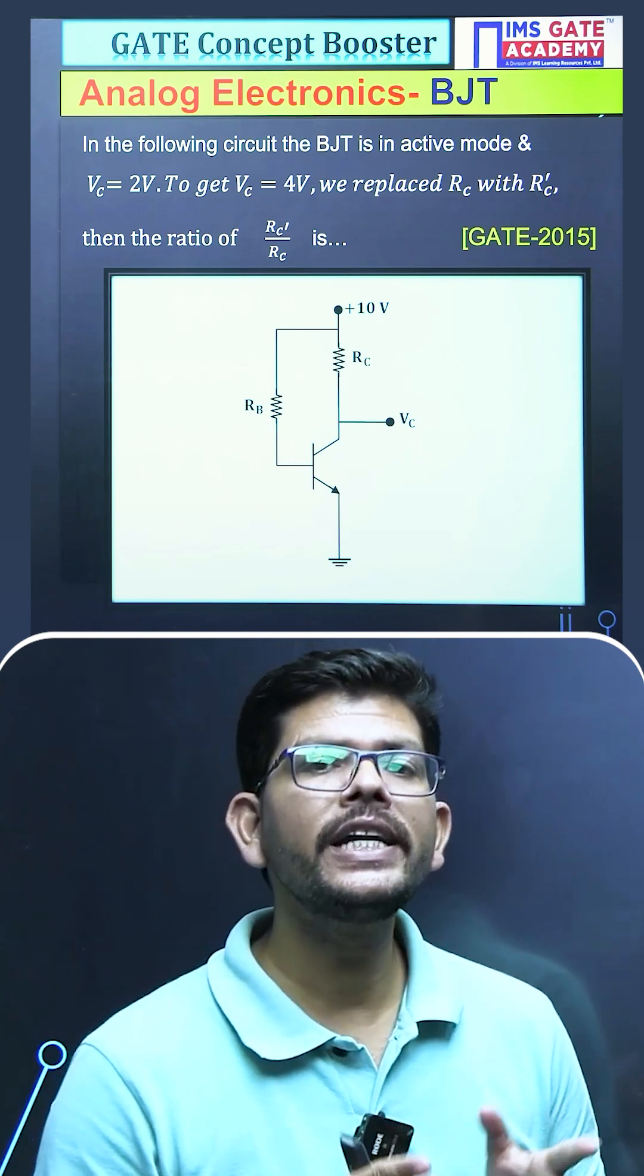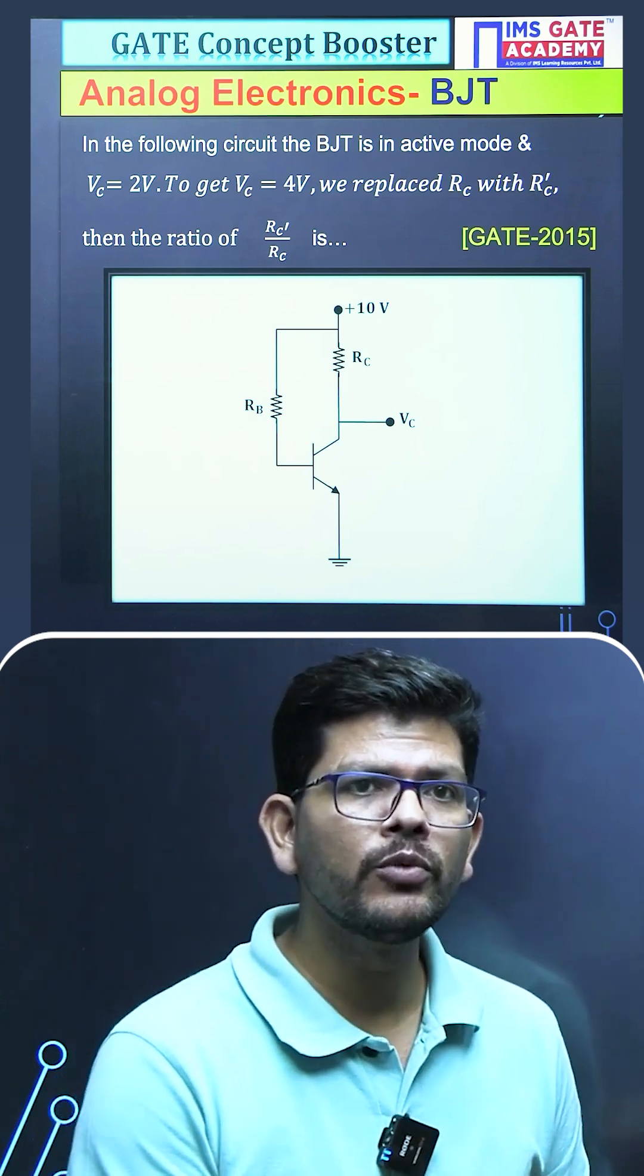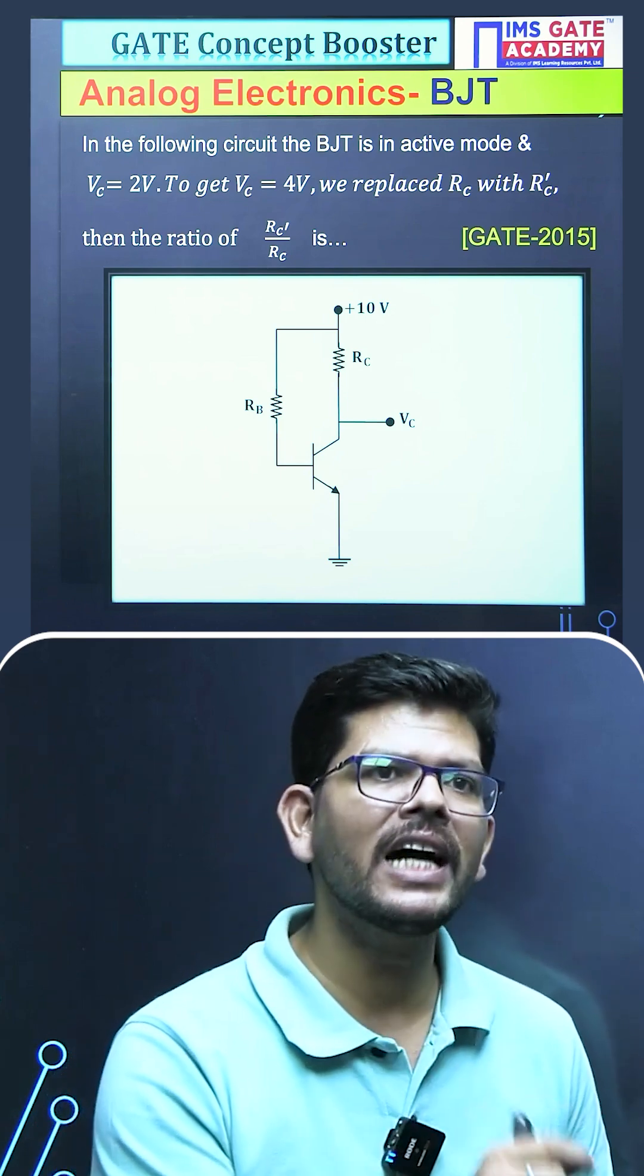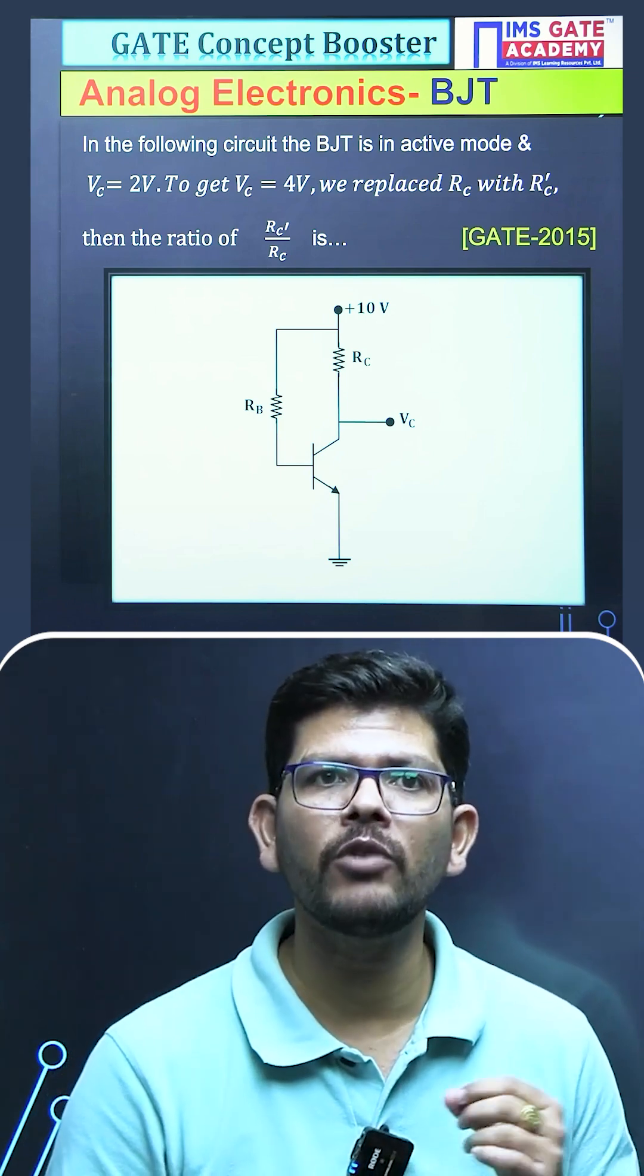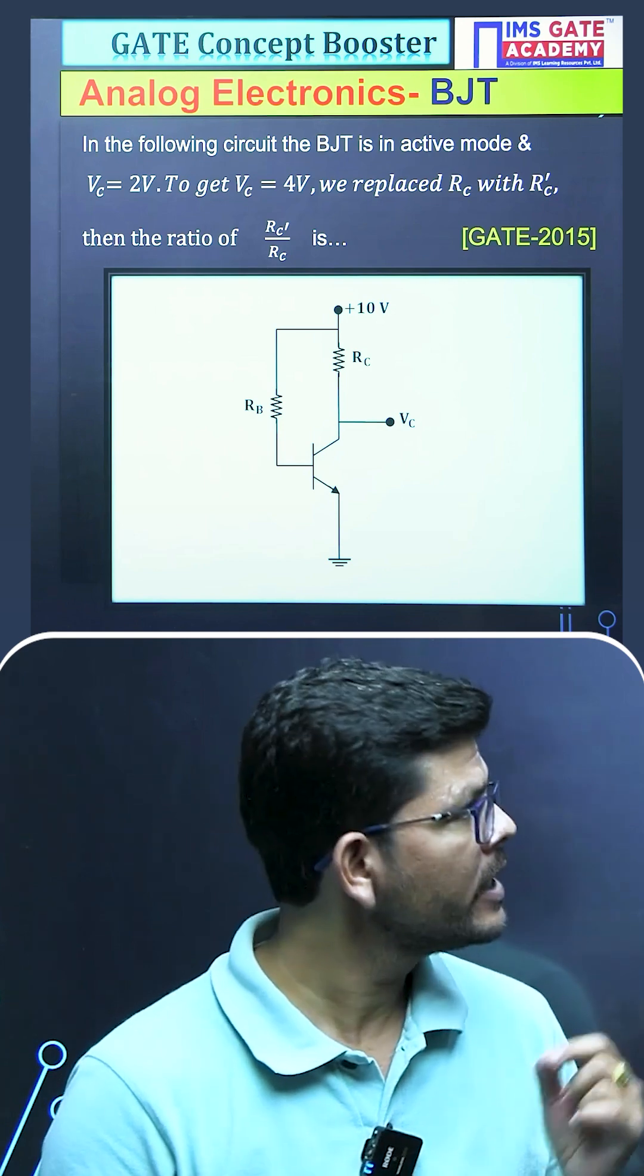given to us, the voltage VC is changed from 2V to 4V, then the resistance RC is also changed from RC to RC dash. We have to find what would be the ratio of RC dash to RC.